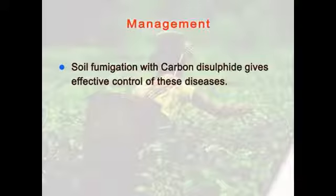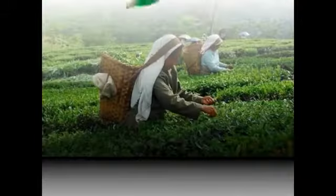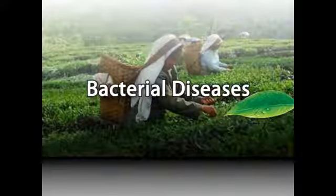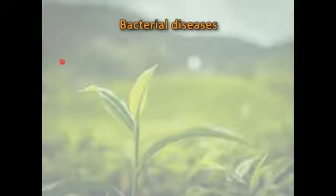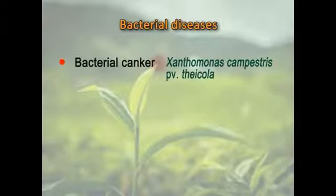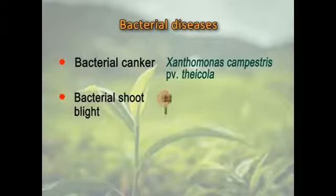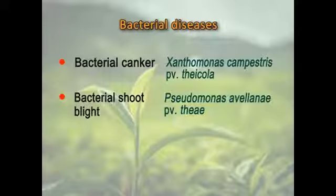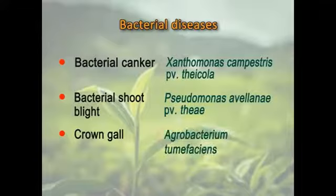That is about the fungal diseases. Next are the bacterial diseases. Bacterial canker is caused by Xanthomonas arboricola pv. theae. Bacterial shoot blight is caused by Pseudomonas syringae pv. theae. Another bacterial disease is crown gall, caused by Agrobacterium tumefaciens.